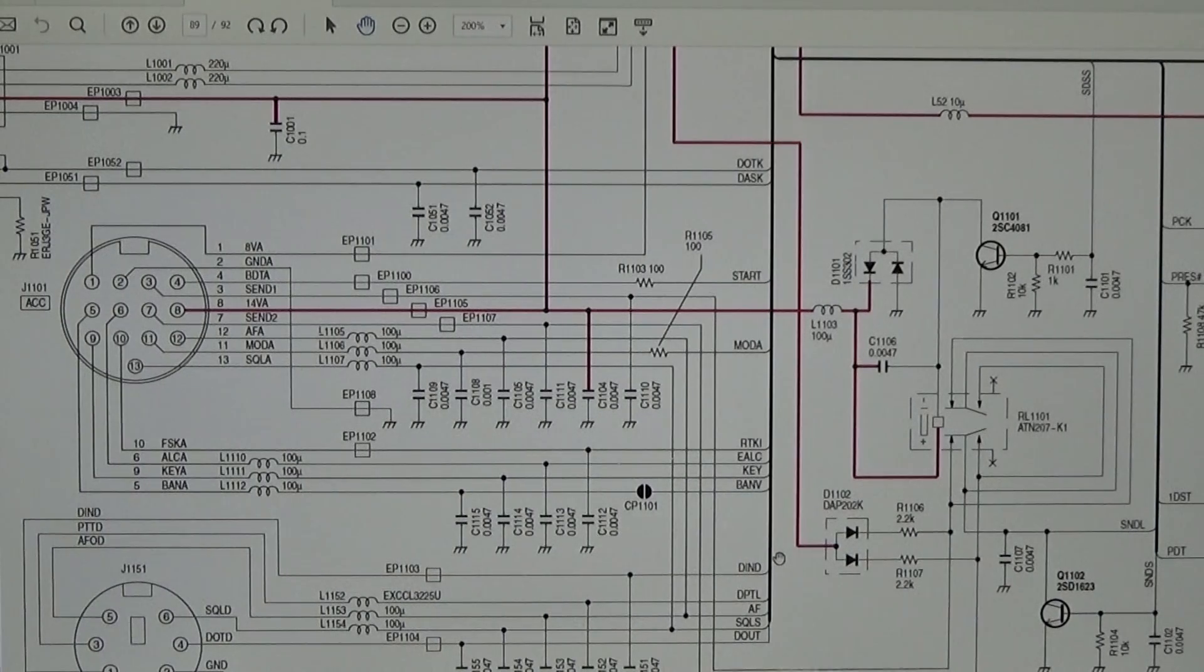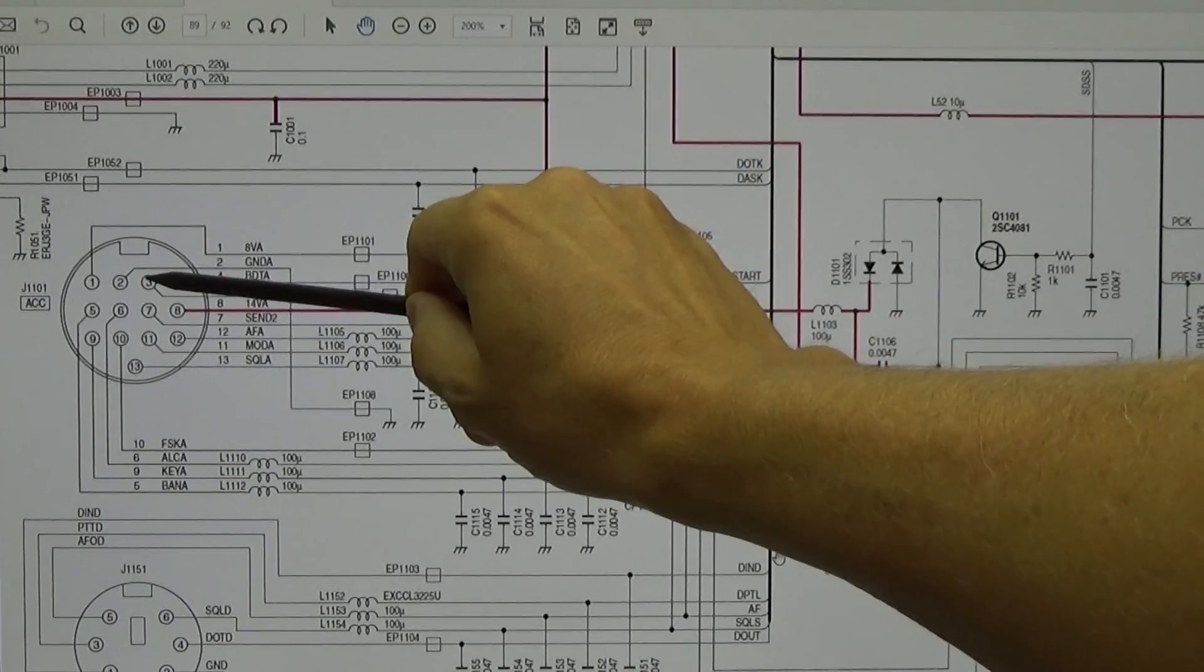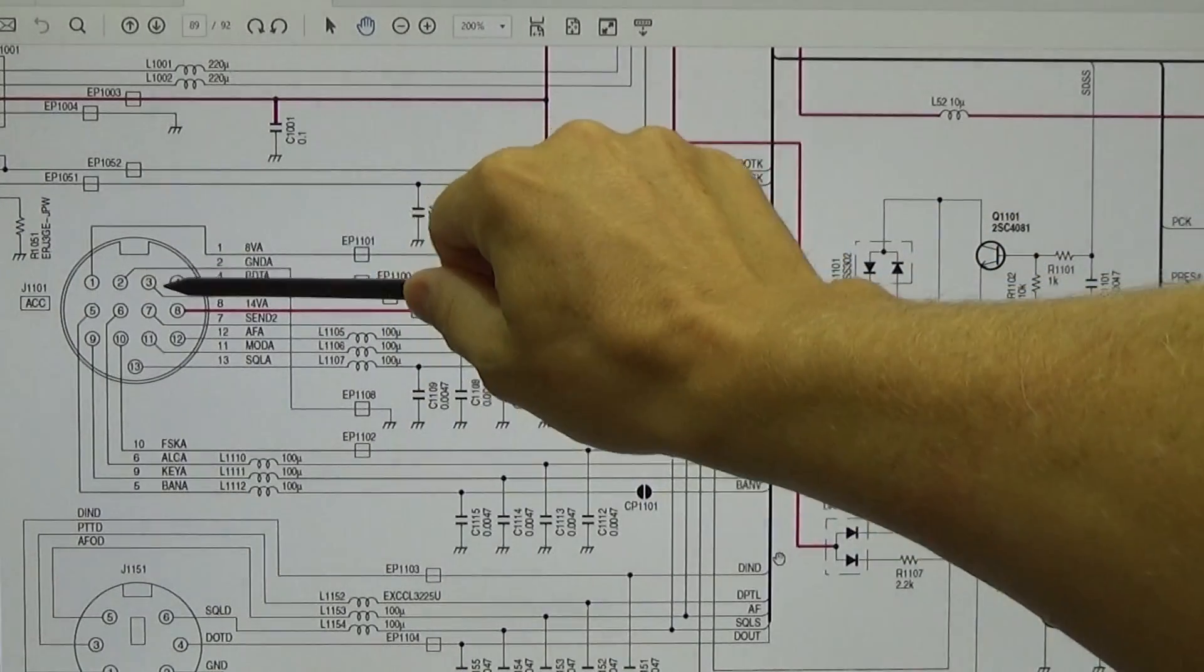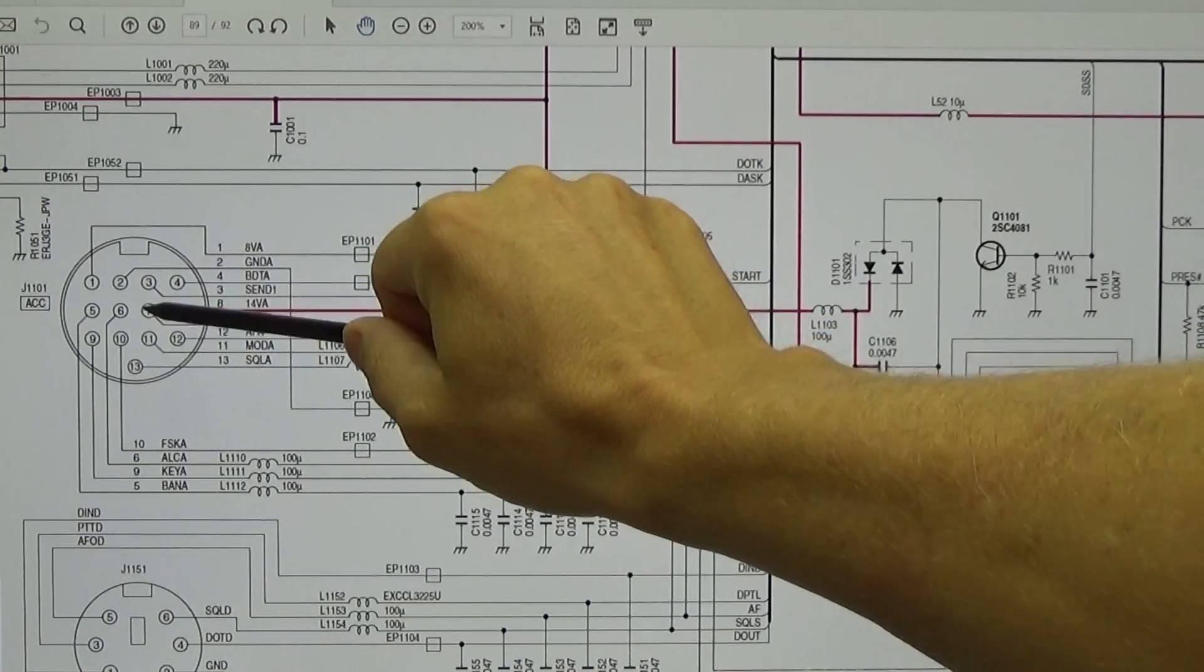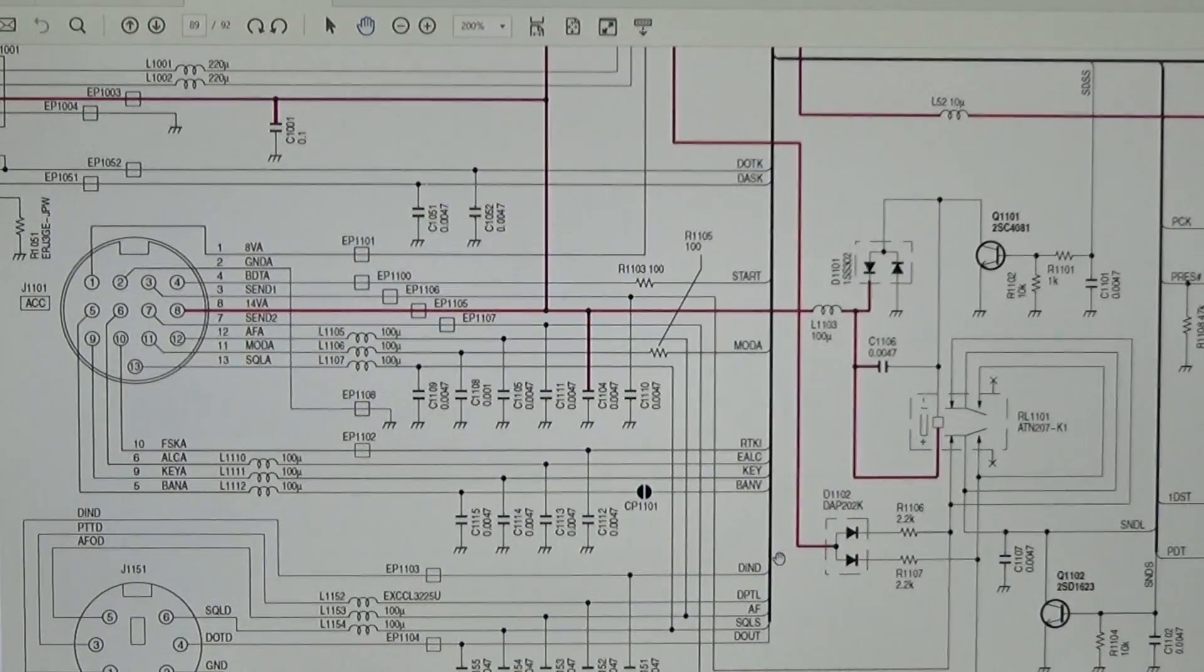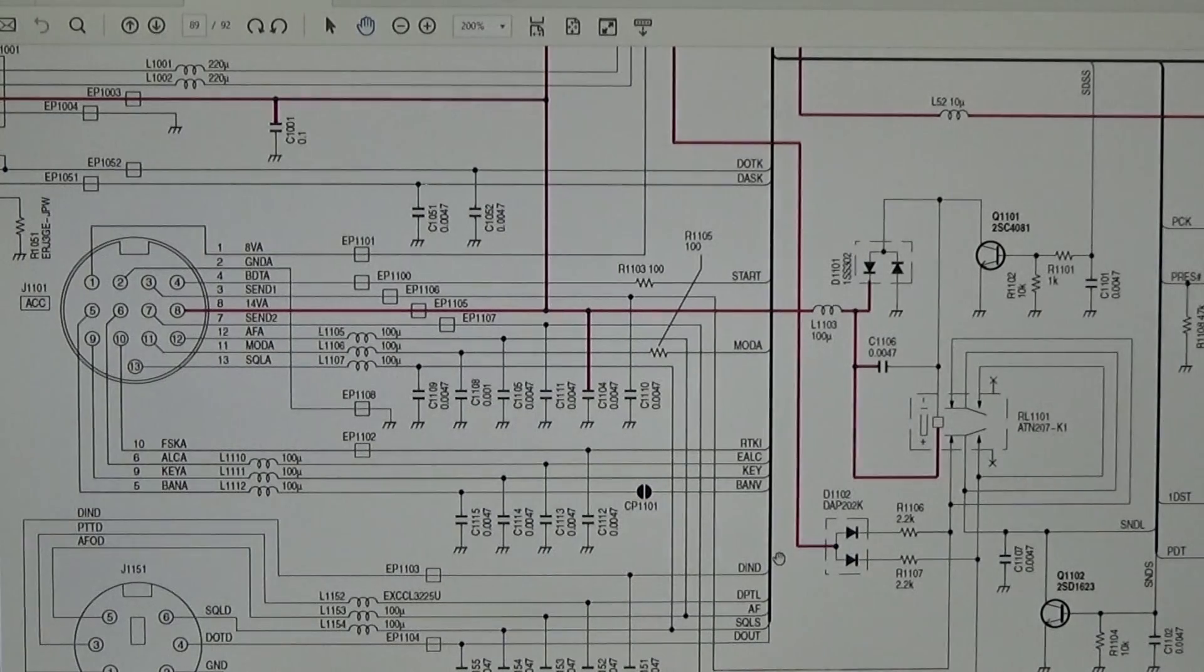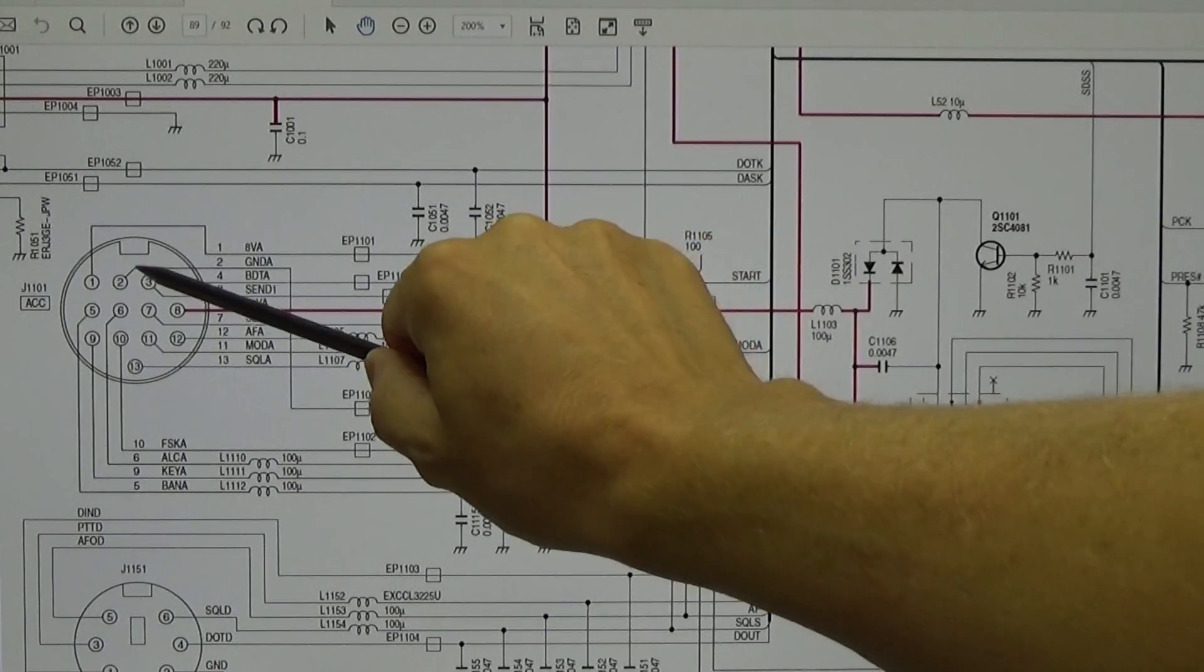Therefore it is not only pin 3 which will be grounded. Pin 3 will only be grounded on HF and 50 megahertz, and pin 7 will do the same on VHF and UHF. But considering we are using this with a shortwave linear amplifier, we have to talk about pin 3.